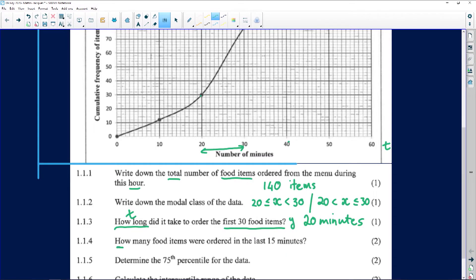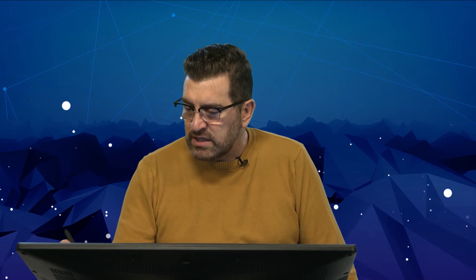Nothing fascinating or interesting there yet. Everything we've got so far is on the graph. We just need to know where to look for it. Number four, how many food items, this is a Y value I'm looking for, were ordered in, now be careful, in the last 15 minutes. So this time around, time is given, the last 15 minutes. So from 60, I will need to come 15 minutes back and then see where does it cross the ogive because that gives me the number of food items ordered in that interval.